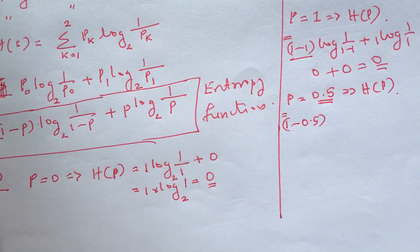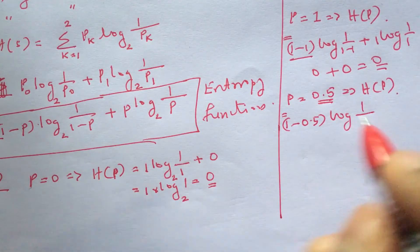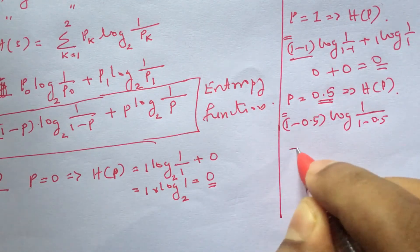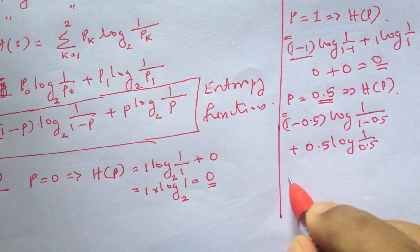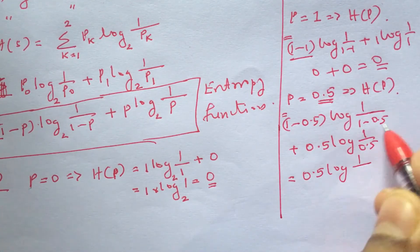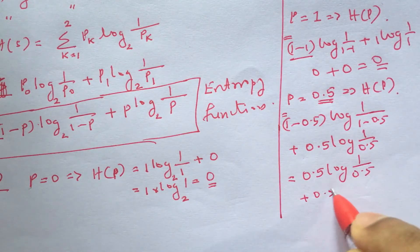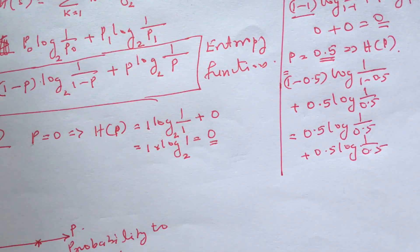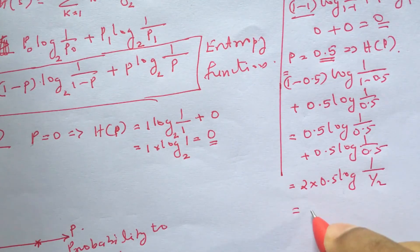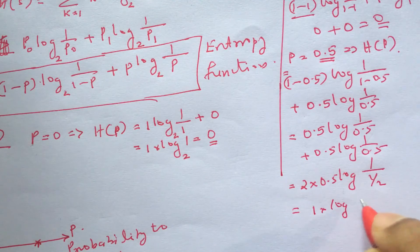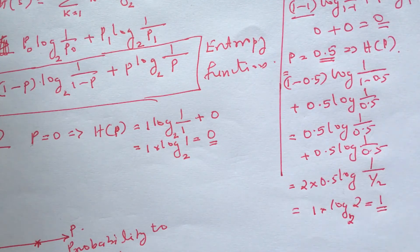H of p at p equals 0.5: H(p) = (1 minus 0.5) times log base 2 of 1 by (1 minus 0.5), plus 0.5 times log base 2 of 1 by 0.5. This equals 0.5 times log base 2 of 2 plus 0.5 times log base 2 of 2, which equals 0.5 plus 0.5, so H(0.5) equals 1.